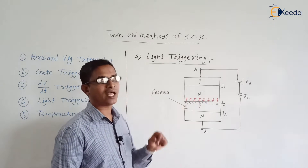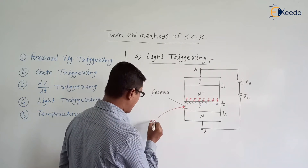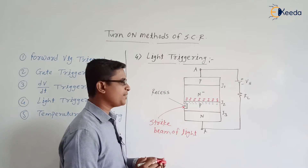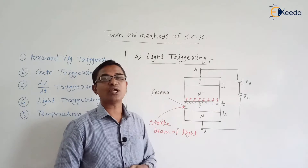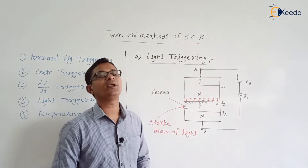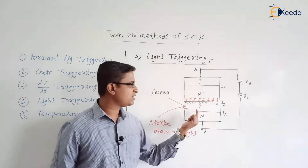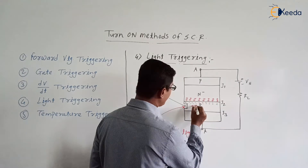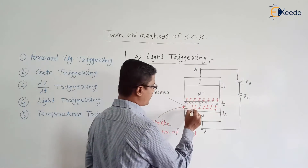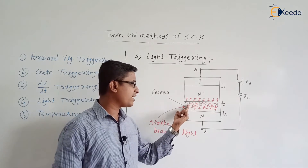What is the purpose behind this recess? Generally, we strike a beam of light. When a beam of light strikes at this recess, we are generating additional charge carriers — that is positive charges — in the inner P-type layer. When the beam of light strikes at the recess, there will be the generation of additional charge carriers into the inner P-type layer. In the inner P-type layer, we will be getting more positive charge carriers. These positive charge carriers will be recombining with the negative charge carriers present at the P-side of junction J2.